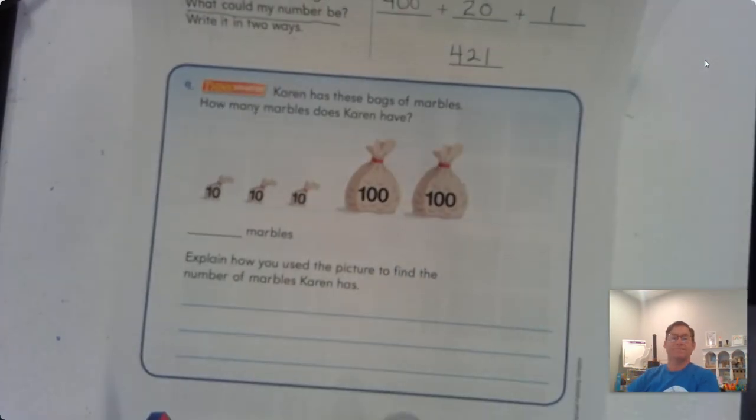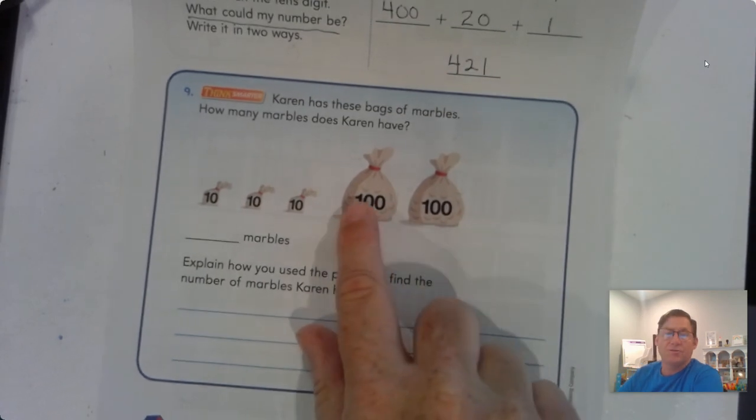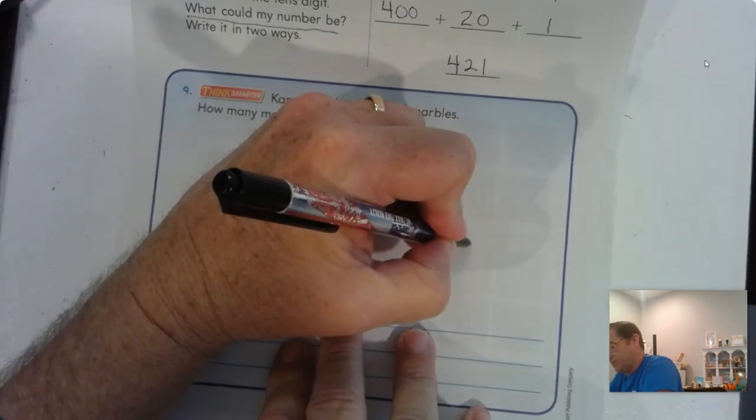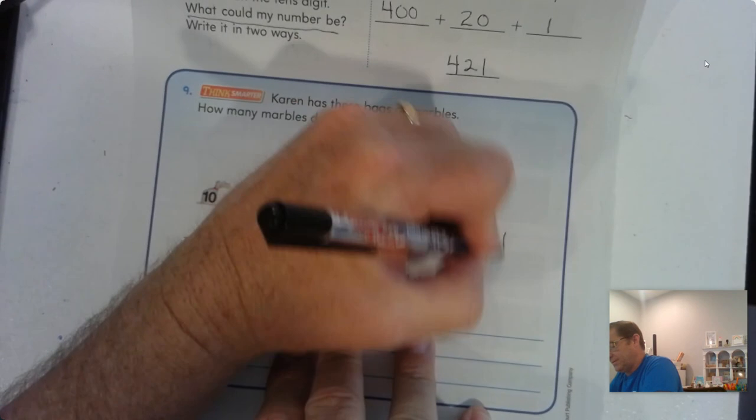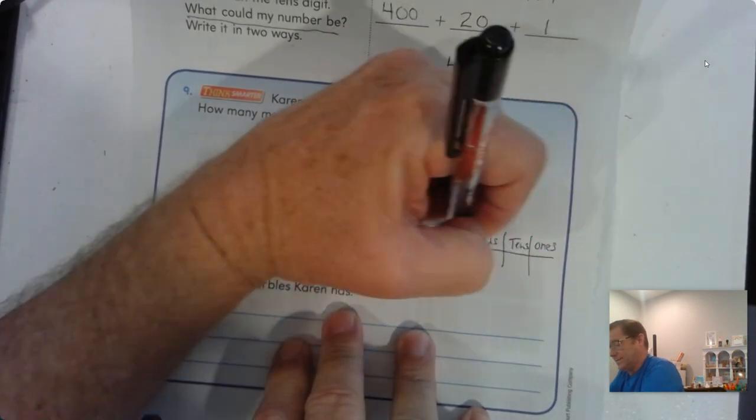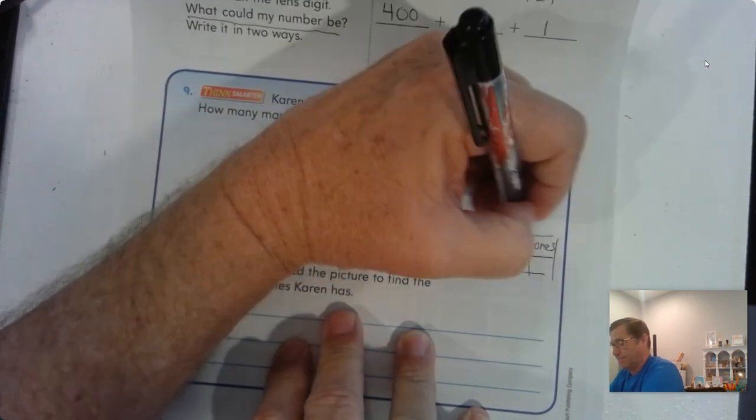All right. Number 9. Karen has these bags of marbles. How many marbles does Karen have? Well, we see 2 hundreds. That's the 200 blocks, right? So if we were writing out a hundreds chart, we could do this. Hundreds, tens, ones.